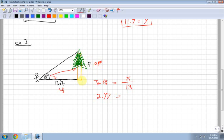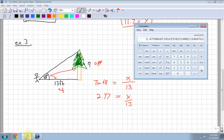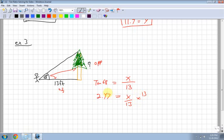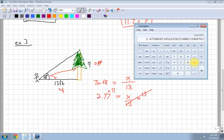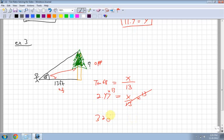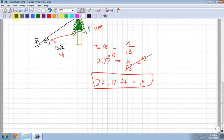Now what do I do with that? Because I multiply by my 13 on both sides. So 2.47 times 13 is equal to 32.17 feet is equal to x. So that's how high my tree is. Just make sure that your answers make sense. I'm just going to go through one more example.